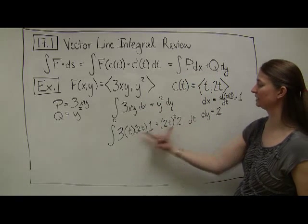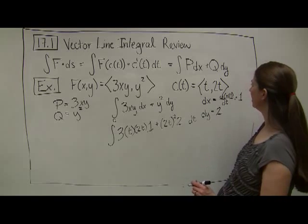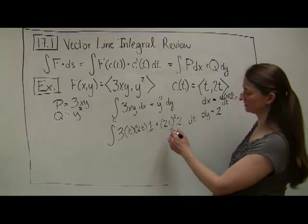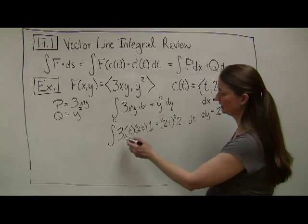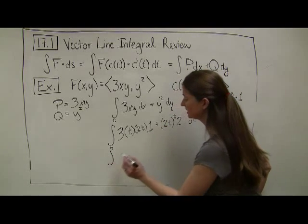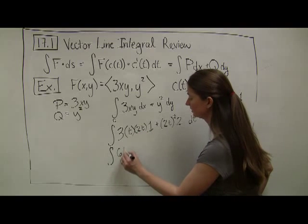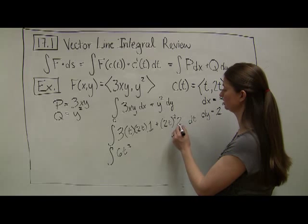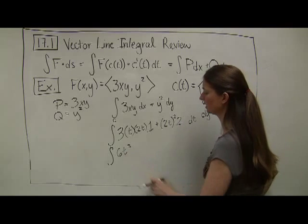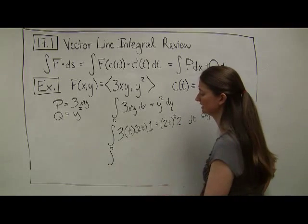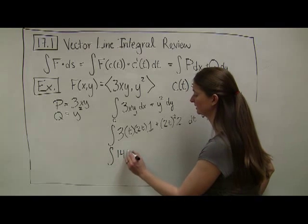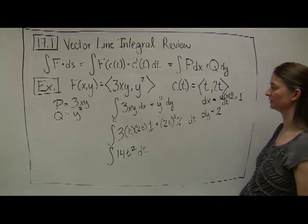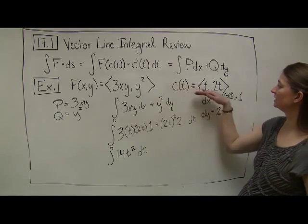We'll leave it as an indefinite integral since we aren't actually computing it. The integral equals 6t² plus 4t² times 2, which is 8t², and 6 plus 8 is 14t². So that's how we look at this using PQ notation.